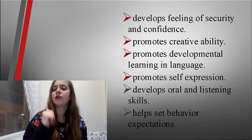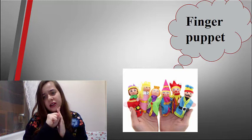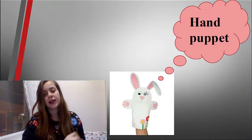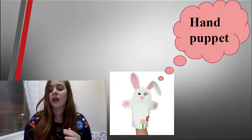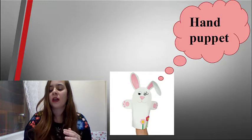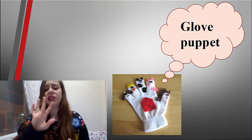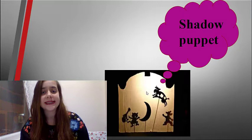Let's look at types of puppets. Finger puppets: a simple finger puppet fits onto a single finger and has no moving parts. Hand puppets: controlled by one hand which occupies the interior of the puppet. Glove puppets: like a finger glove which fits on one hand and operates from below by fingers. Shadow puppets: these are made of cardboard which produces shadows on a white screen.